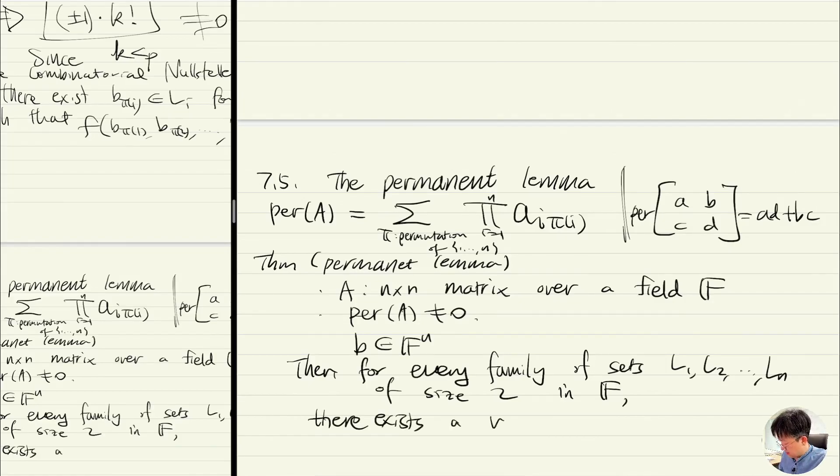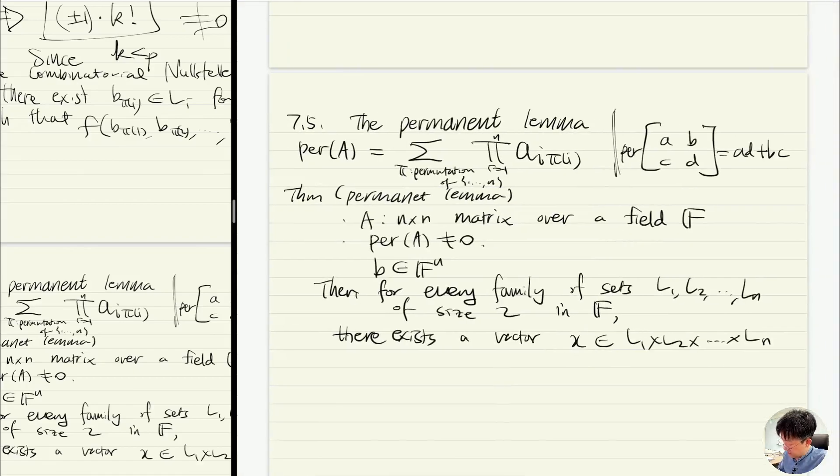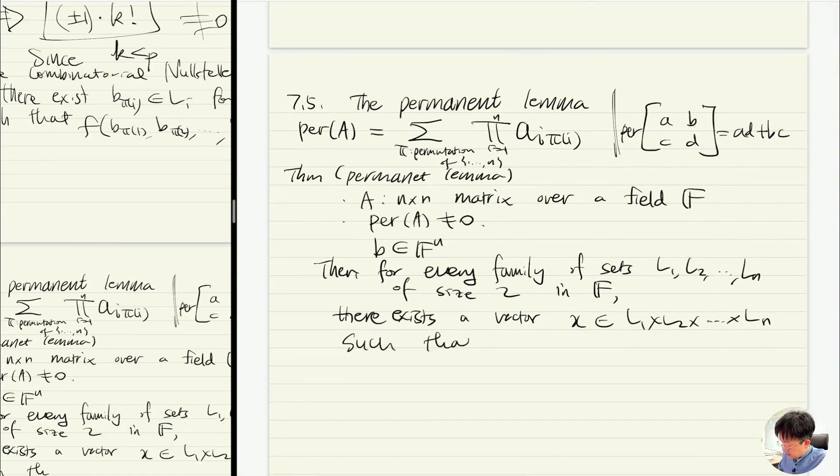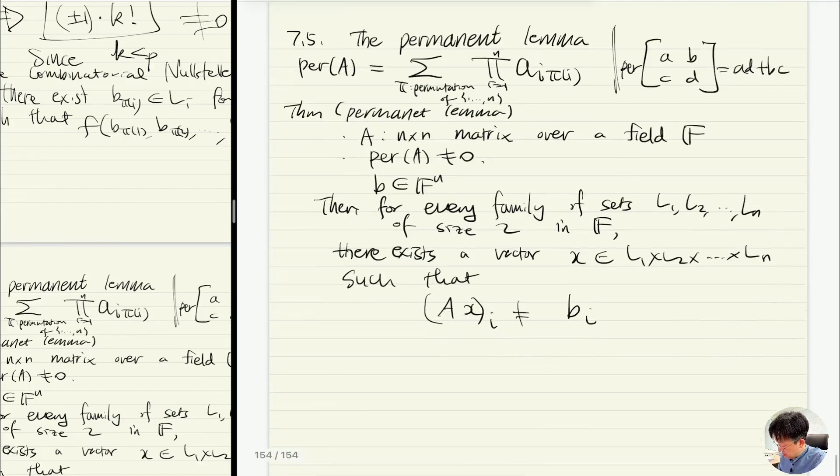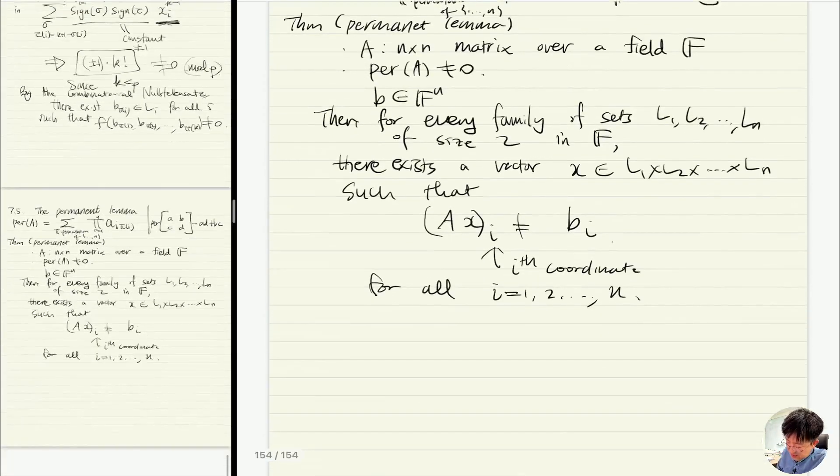There exists a vector x in L1 times L2 times Ln such that when you multiply x to A and look at the i-th coordinate, that's different from the i-th coordinate of b. This means the i-th coordinate for all i from 1 up to n. So that's the permanent lemma.